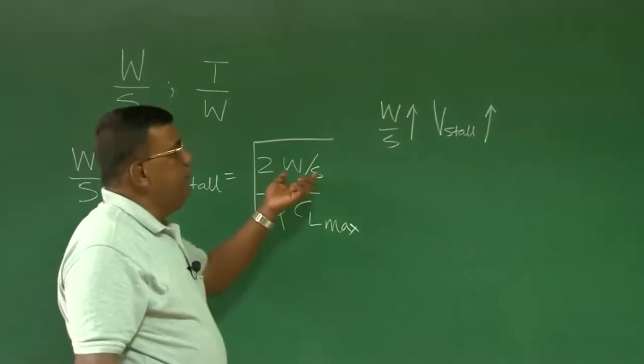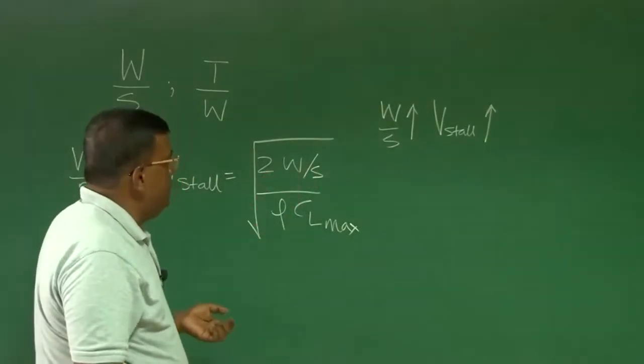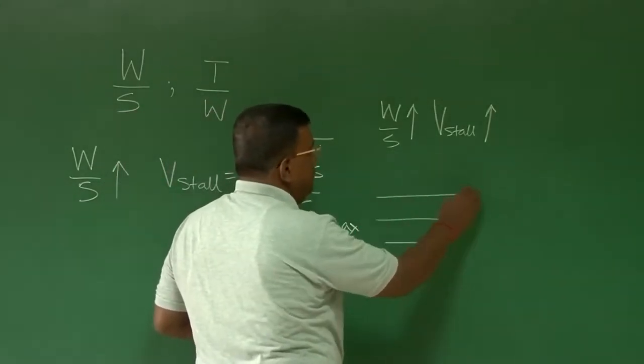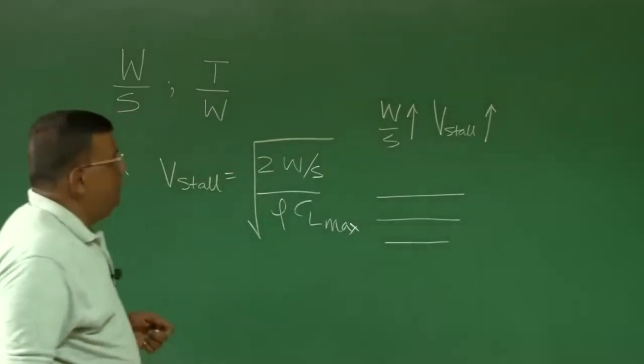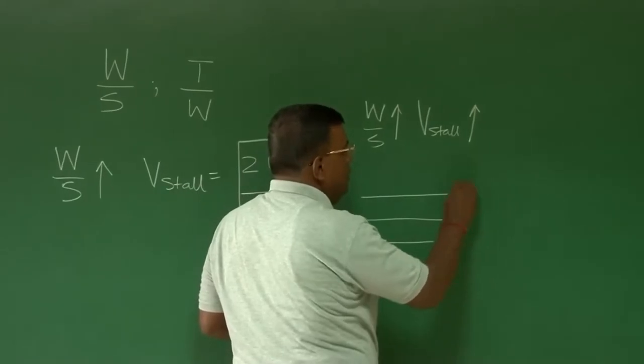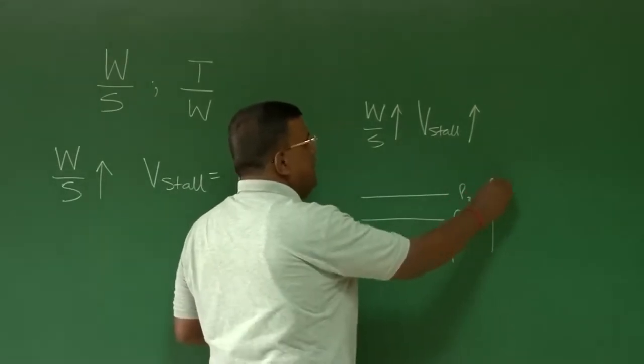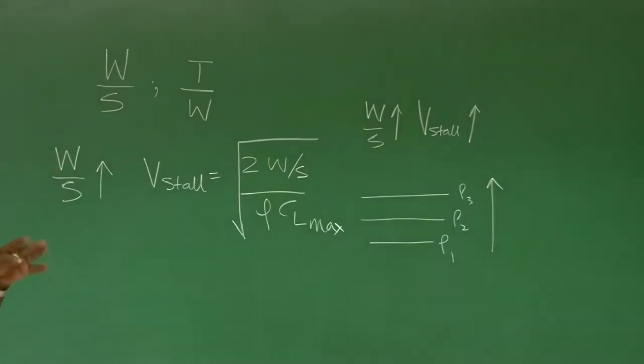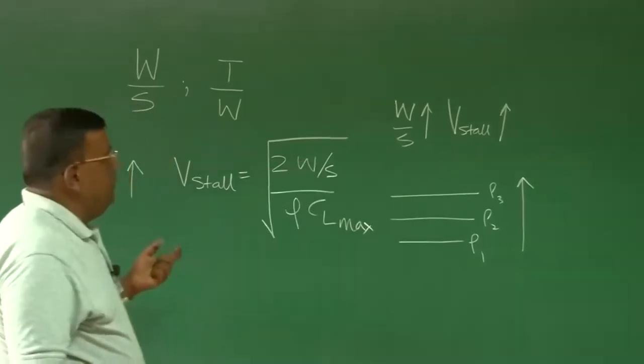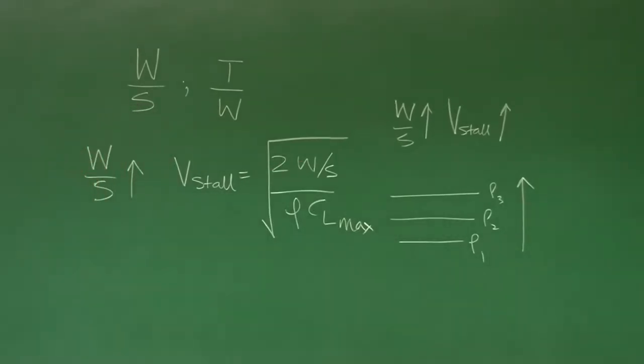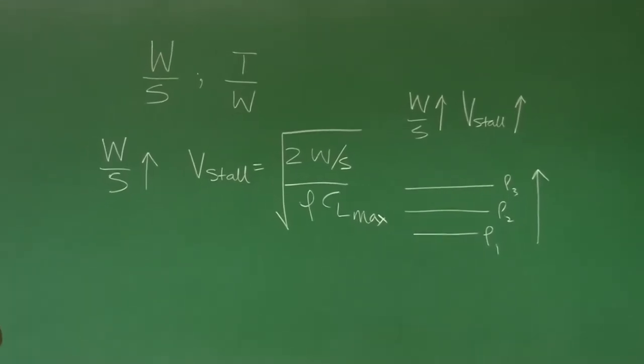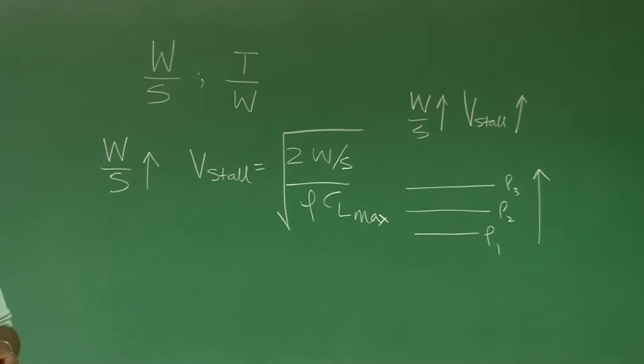Even for a given wing loading, even for a constant wing loading, as I am trying to take off at different altitudes, let us say rho 1, rho 2, rho 3, as I am going like this, the density of air goes on decreasing, so the V stall will also go on increasing. What is so important about V stall? V stall by definition is that minimum speed at which you can fly such that lift equal to weight.